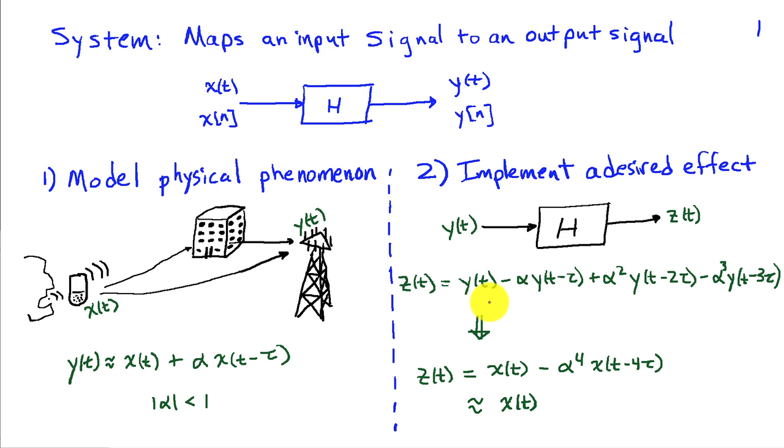Let's take z of t to be equal to y of t, what I measure at the base station, minus alpha times the delayed version of y of t. When I multiply alpha times the delayed version of y of t and subtract it, the minus alpha x of t minus tau associated with this term is going to cancel out the alpha t minus tau term in y of t.